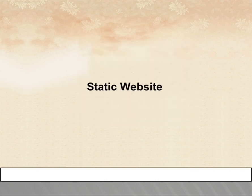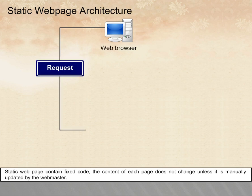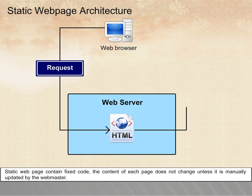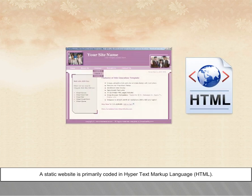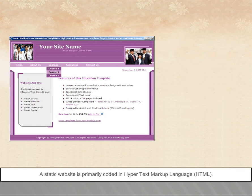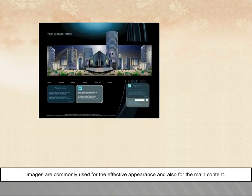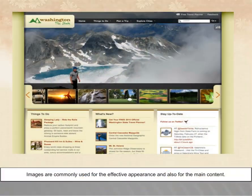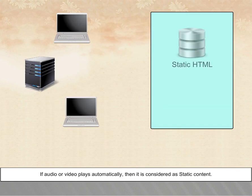Static Website: The content of each page does not change unless it is manually updated by the webmaster. A static website is primarily coded in Hypertext Markup Language (HTML). Appearance beyond basic HTML is controlled using Cascading Style Sheets (CSS). Images are commonly used for effective appearance and also for the main content. If audio or video plays automatically, then it is considered as static content.